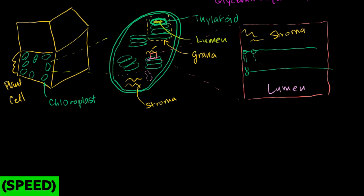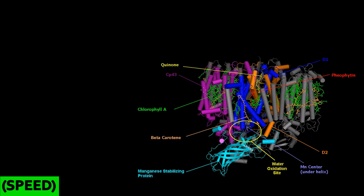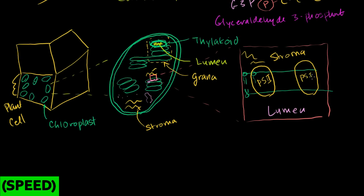On this membrane you have proteins and complexes of proteins and molecules that span it. One is called Photosystem II — I'll do a sneak peek of what it actually looks like. As you can see, it truly is a complex: cylindrical proteins, green chlorophyll molecules, all sorts of things jumbled together to perform a very particular function. You also have Photosystem I, and other complexes like the cytochrome B6F complex.